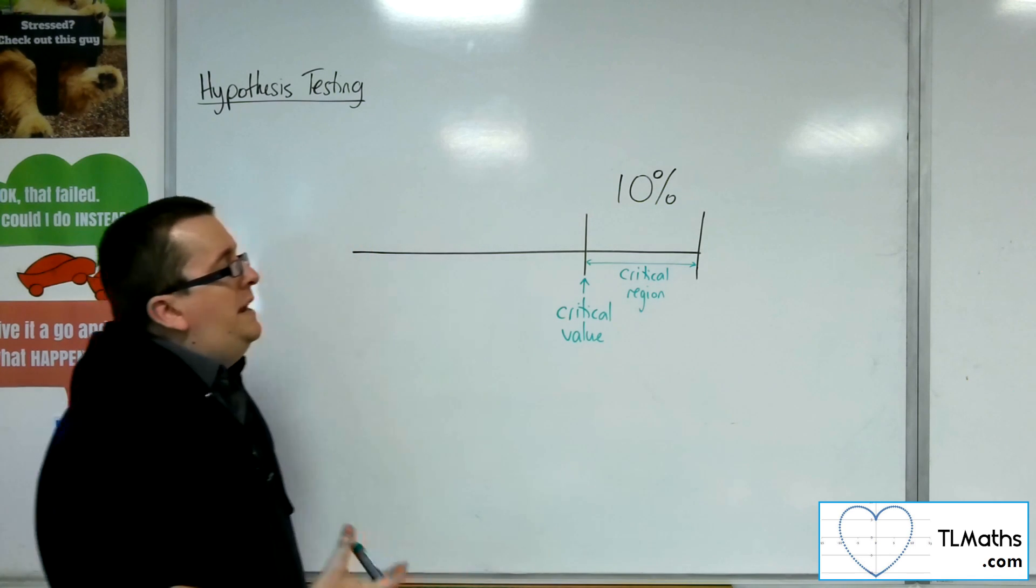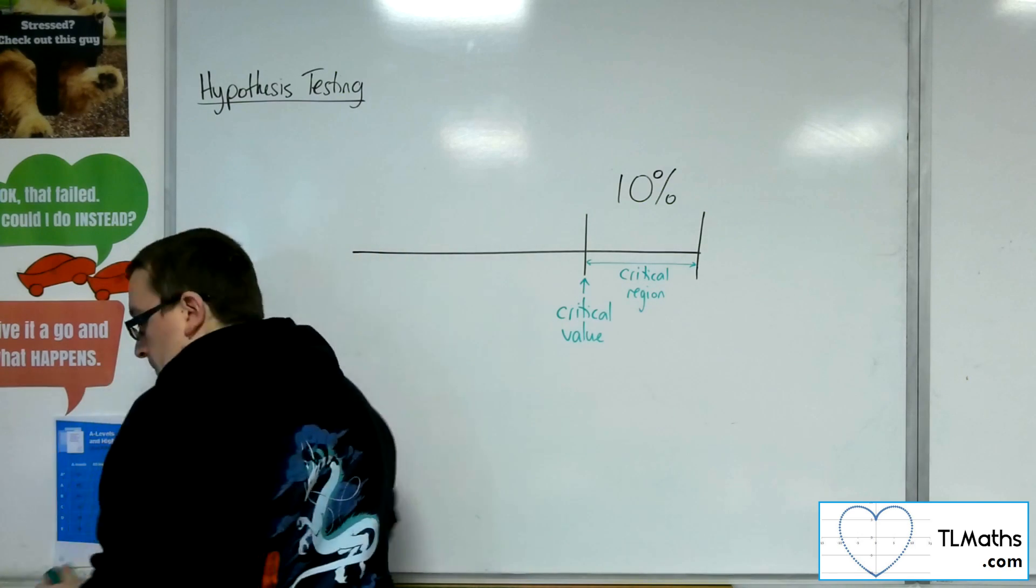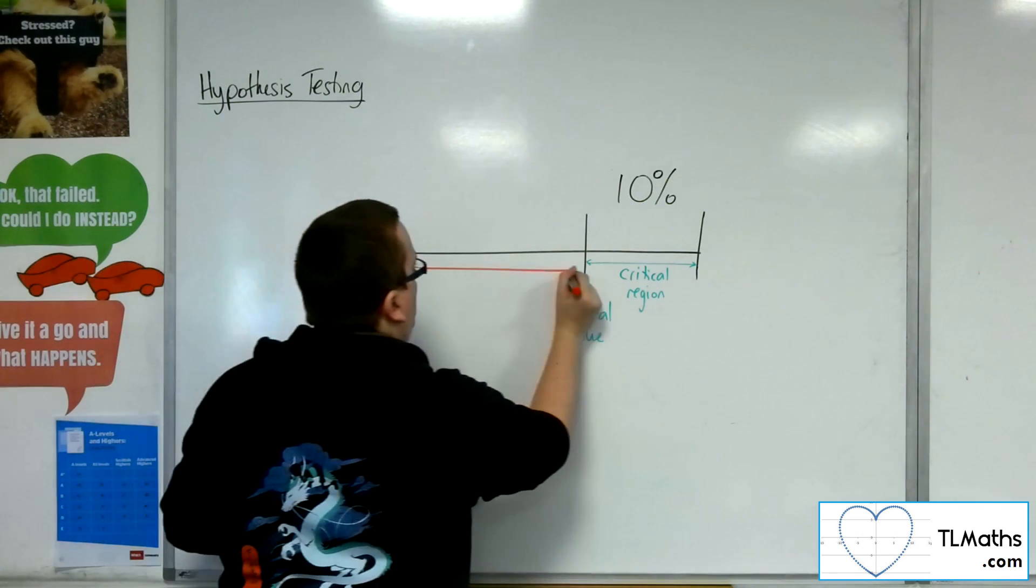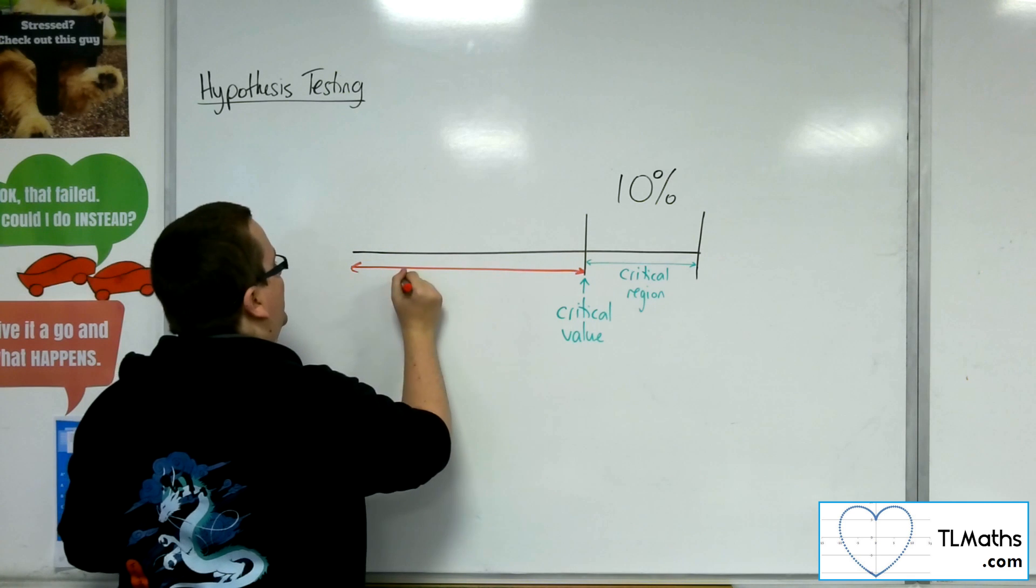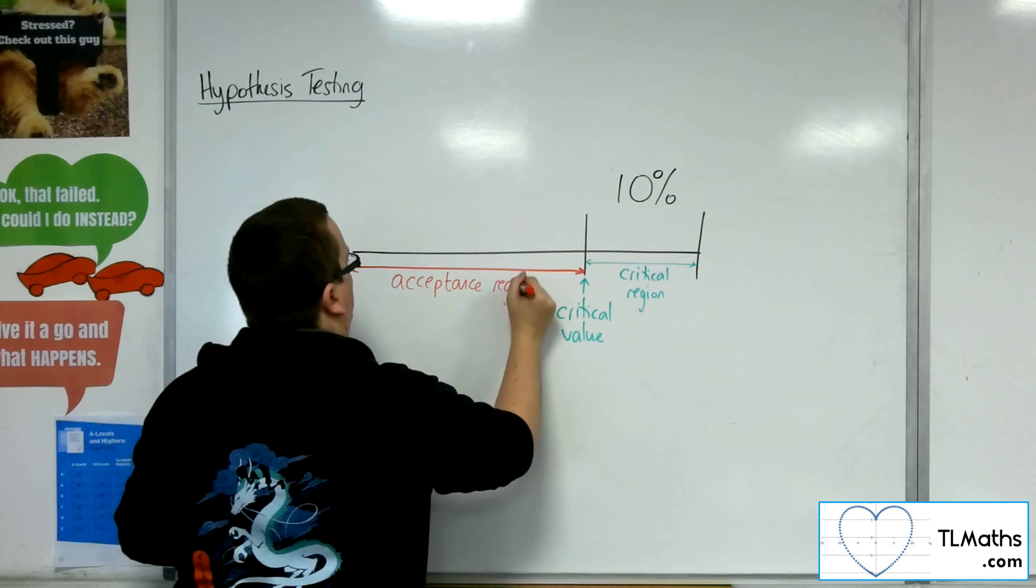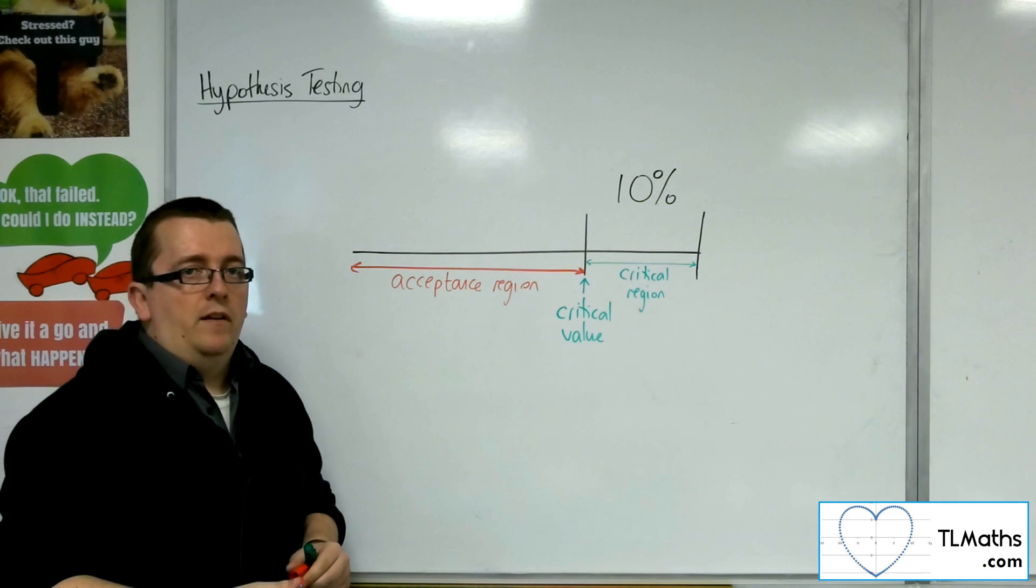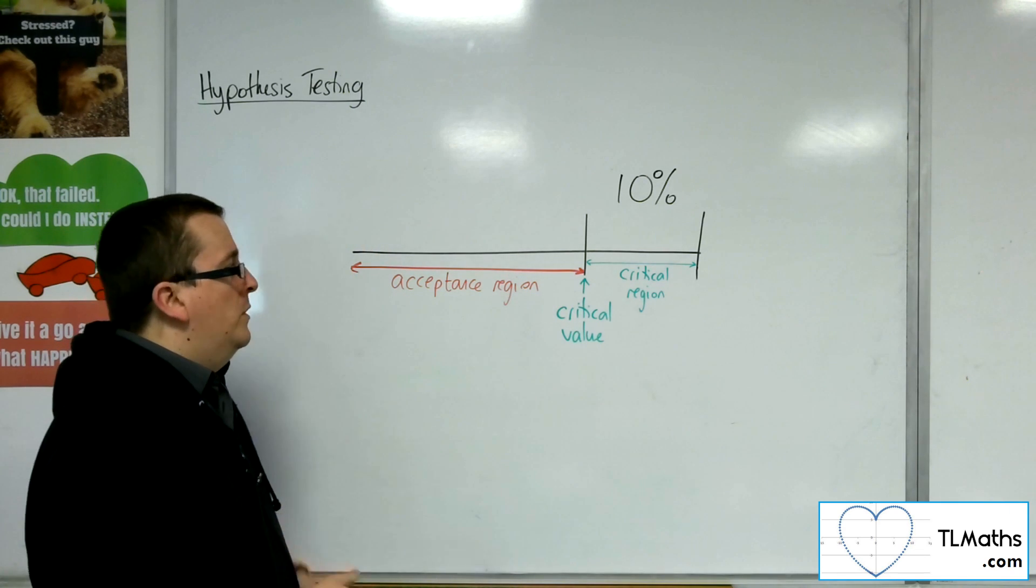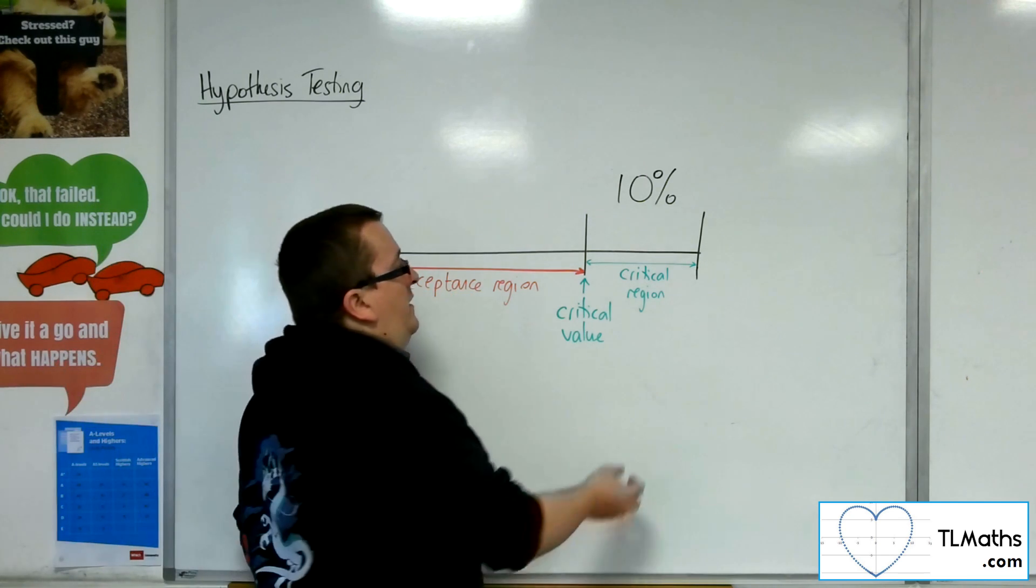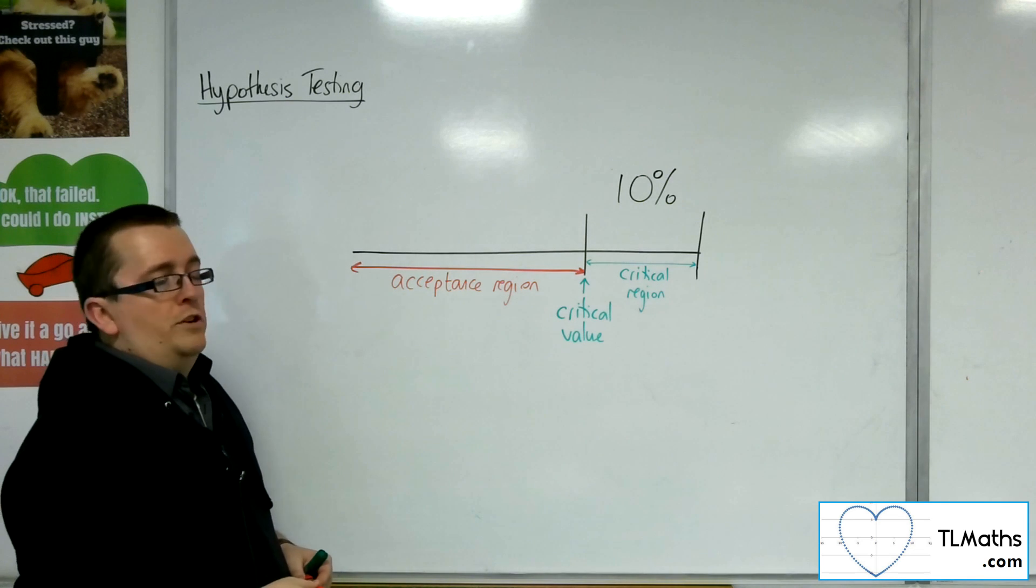If instead it is a value that is outside of the critical region, in this region over here that we refer to as the acceptance region, then you fail to reject the null hypothesis. So you'll only reject the null hypothesis when it is in that 10% critical region.